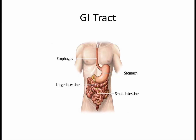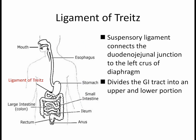To review, this is the basic GI tract — the esophagus, stomach, small intestine, and large intestine — and you can have bleeding anywhere within it. One very important landmark is the ligament of Treitz, a suspensory ligament connecting the duodenal-jejunal junction to the left crus of the diaphragm, located in the fourth portion of the duodenum. We use this landmark to divide the GI tract into an upper and lower portion: anything proximal is an upper GI bleed, and anything distal is a lower GI bleed.